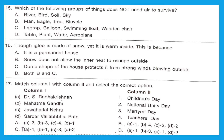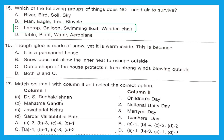Question 15: Which group of things does not need air to survive? Option A has river, bird, soil, sky — bird is a living thing and needs air. Option B has man, eagle, tree, bicycle — living things are present. Option C has laptop, balloon, swimming float, wooden chair — all man-made non-living items. They do not need air to survive. Option C is the right answer.